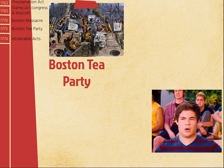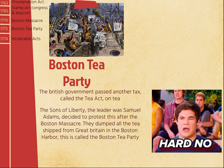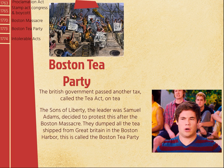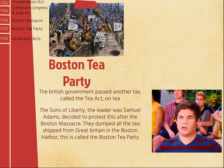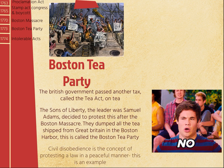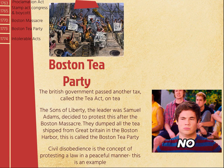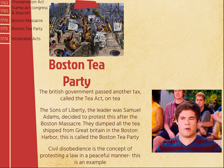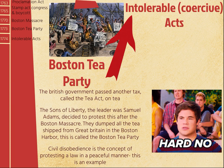The Boston Tea Party happens not long after. The British government passed another tax on tea. The Sons of Liberty, led by Samuel Adams, decided to protest this by dumping the tea into Boston Harbor — called the Boston Tea Party. They dressed up like Native Americans with war markings on their face and hair so they were thoroughly disguised. This is called civil disobedience — protesting in a peaceful manner. This is an example of civil disobedience if the STAAR asks you, though the real definition would say it's not entirely peaceful since they literally attacked a ship.